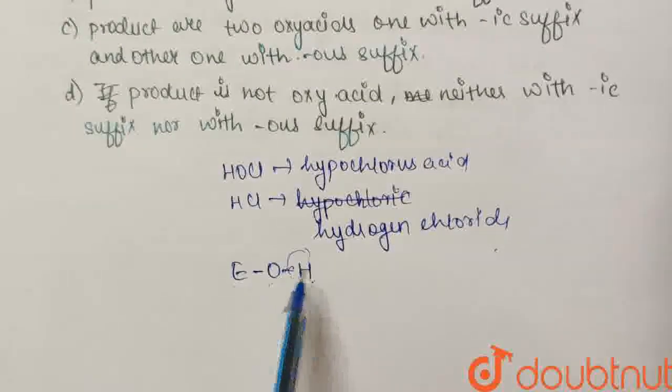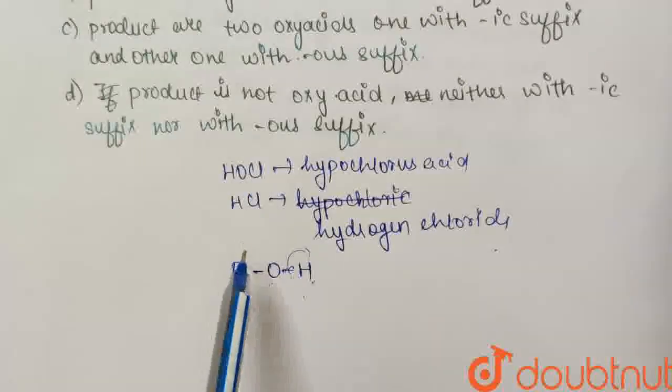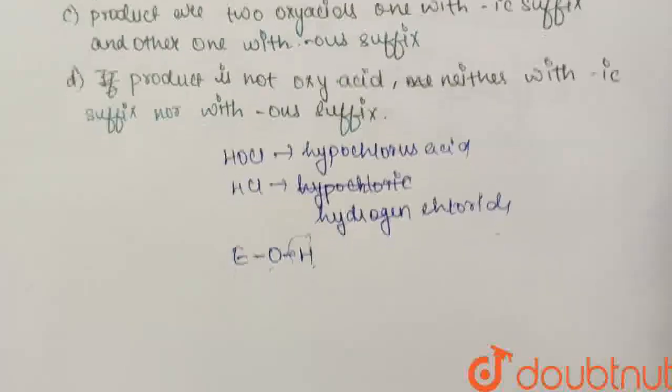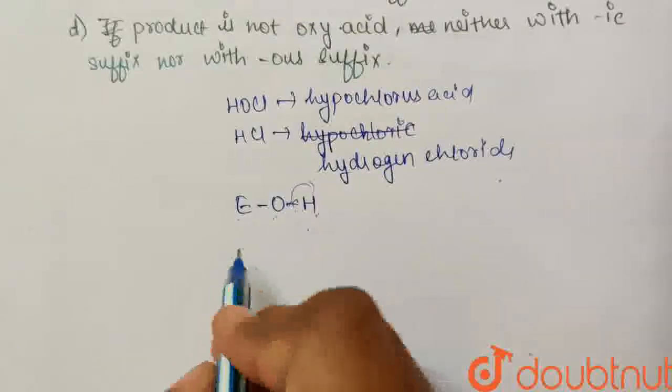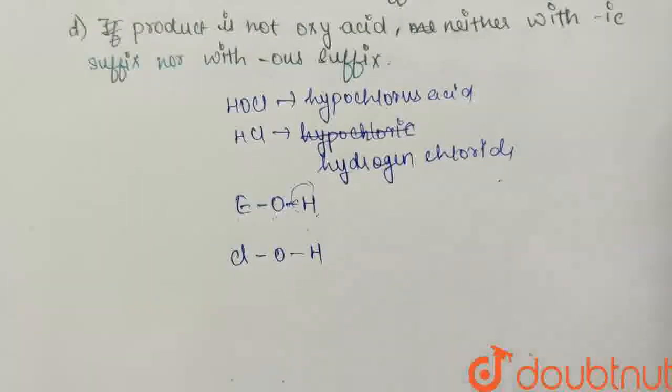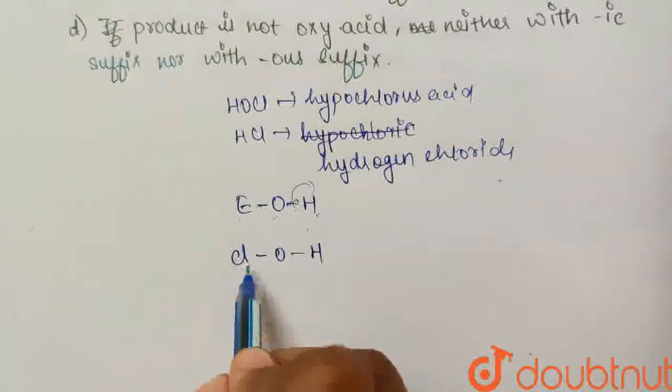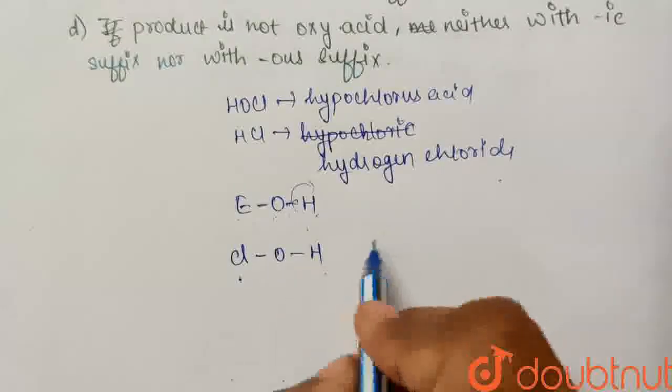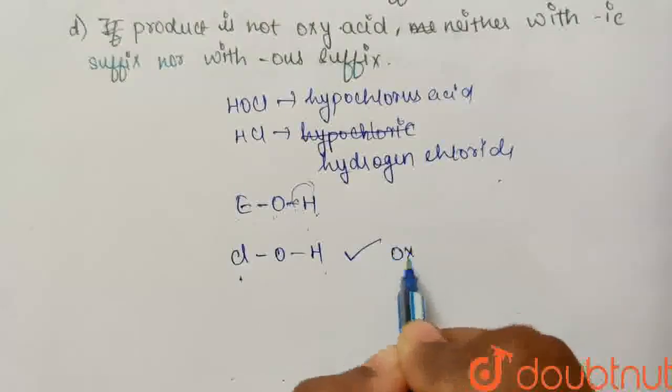Okay, so we need to check that the two acids are in this form. So if we make a structure of HOCl, it will be like this: Cl-O-H. Right, so this is our central atom. So this is our oxy acid.